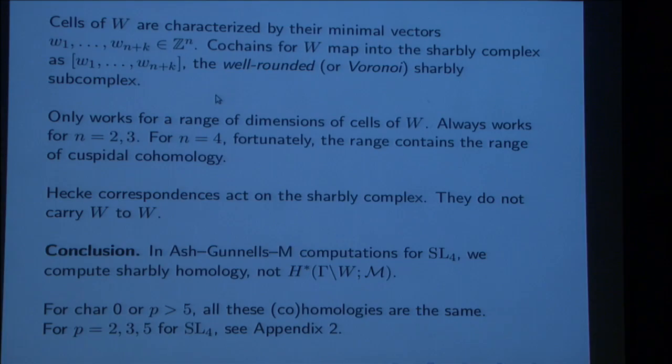The Sharbley complex is this very large object that you can't compute with it in finite terms, because I'm talking about all possible rectangular matrices with rational entries. I've got to get my cell complex involved in here somehow. The cells of W, as I said before, are characterized by their minimal vectors with respect to the basis. Those minimal vectors are, in coordinates, a bunch of vectors in Z^N. So that's like a bunch of columns in a matrix. That's a Sharbley. I can call this the well-rounded Sharbley subcomplex. We also call it the Voronoi Sharbley subcomplex.